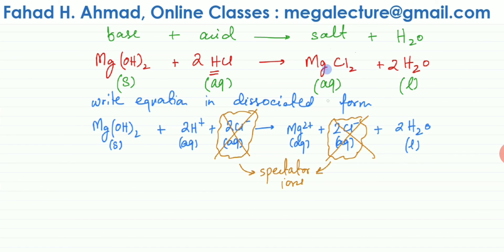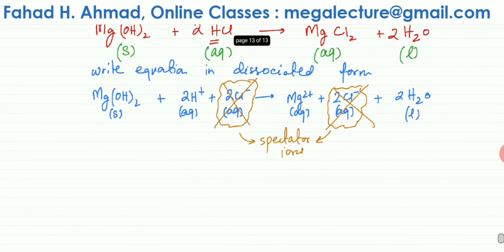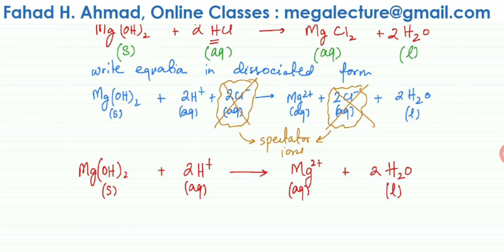Writing the equation without the spectator ions gives you the net ionic equation. Here is the net ionic equation for the reaction — it's the same equation but with the spectator Cl⁻ ions removed.